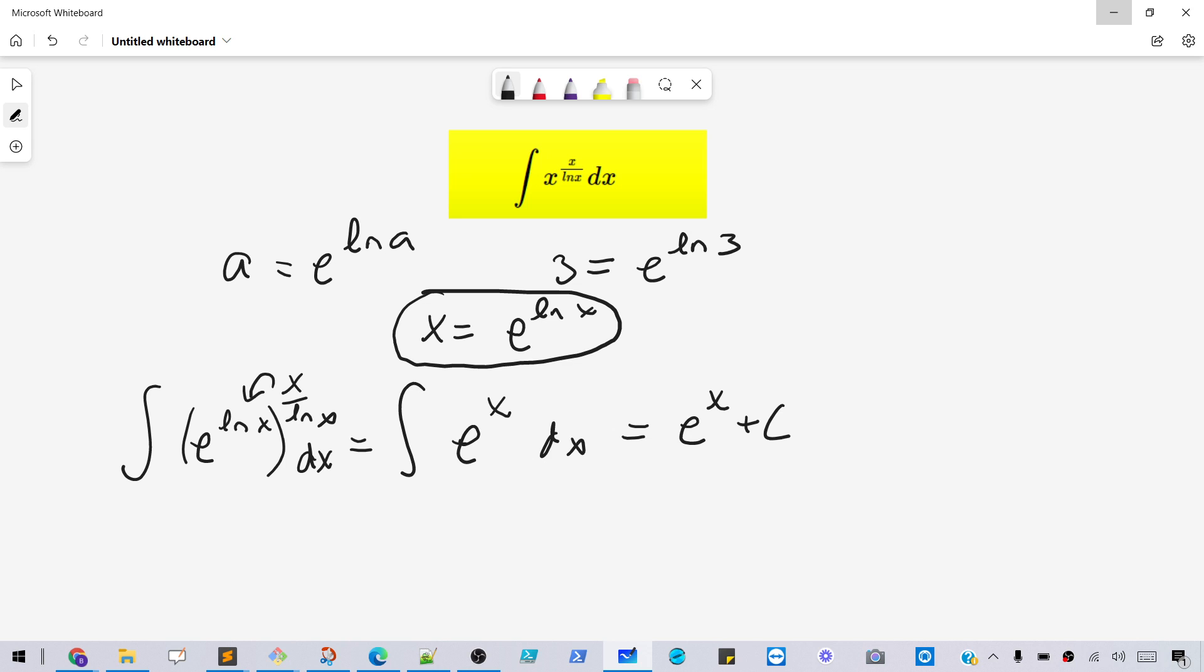And then what we can do is, this is technically correct, but we can try to put it back into the form of the original answer, which isn't too hard because we know that this is the same thing as that. So we can just write this answer back in the original form, x to the x plus c. And then we're done.